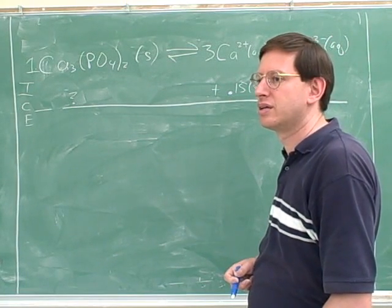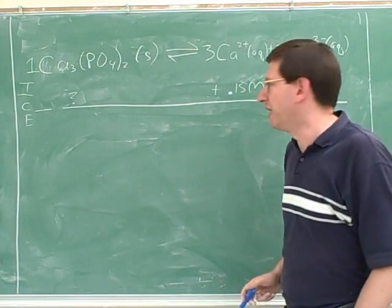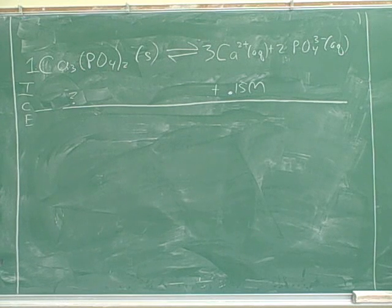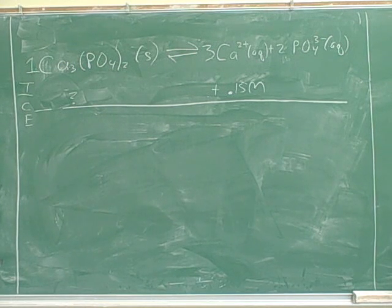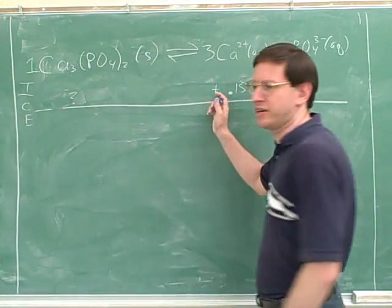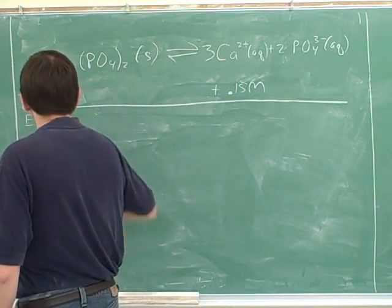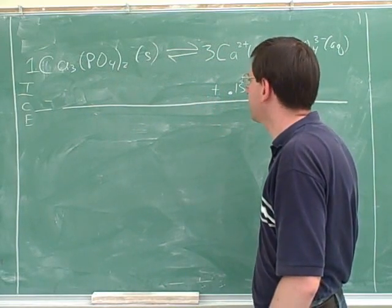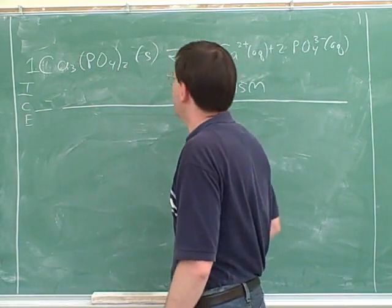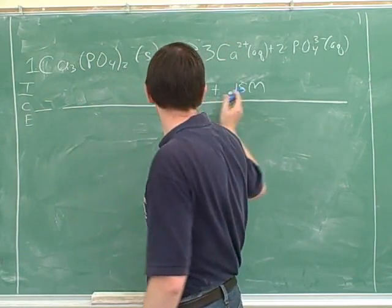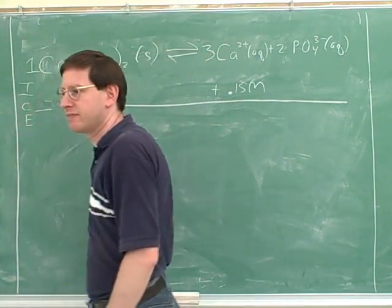This one is harder, but let's calculate this. One thing you might have missed is notice how I put a plus here. So what would be the change on this side? The simplest way to think about this is to say to yourself: this number is 1/3 of this number, so this number should be 1/3 of this number. So this should be 1/3 of 0.15, which is 0.05. So you got that correct.